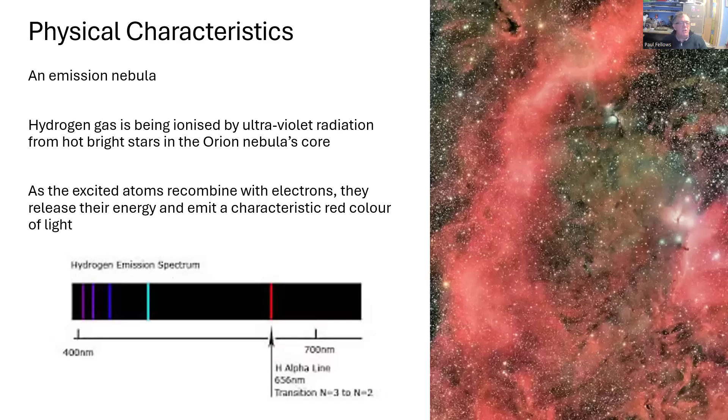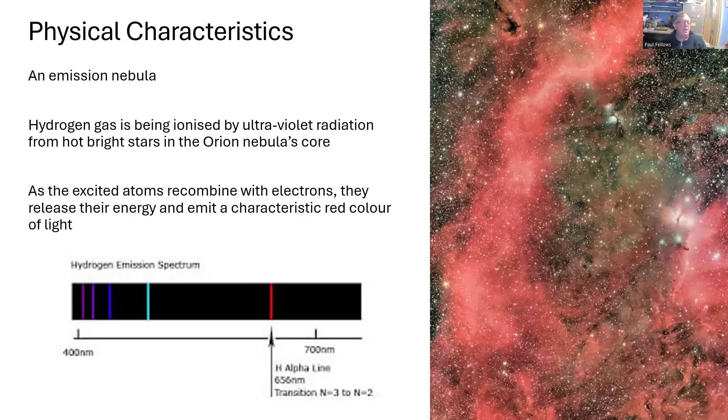So physically, it's an emission nebula. It's hydrogen gas that is being ionized by ultraviolet light coming from the hot, bright stars in the core of Orion's nebula. The ultraviolet hits the atoms, excites the electrons into high energy states. And then as they cascade down the energy levels, they give off the characteristic wavelengths of light.